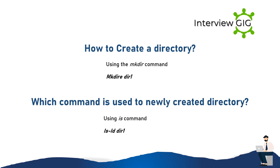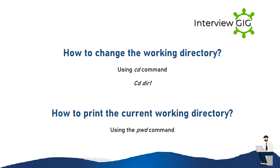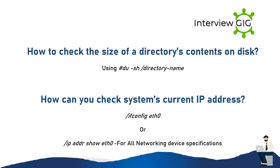How to create a directory? Using the mkdir command: mkdir dir1. Which command is used to list a newly created directory? Using the ls command: ls dir1. How to change the working directory? Using the cd command: cd dir1. How to print the current working directory? Using the pwd command. How to check the size of a directory's contents on disk? Using du -sh /directoryname. How can you check the system's current IP address? Using ifconfig eth0 or ip address show for all networking device specifications.